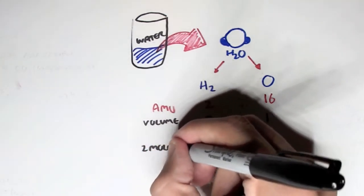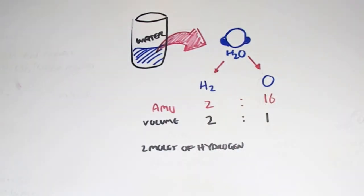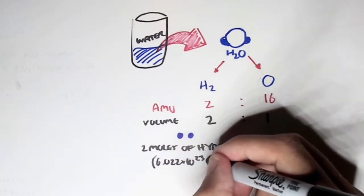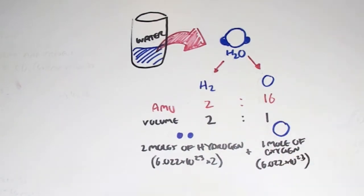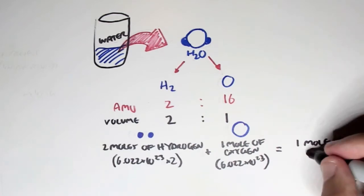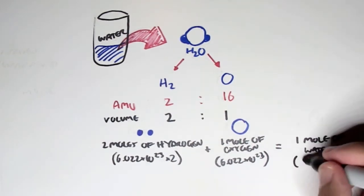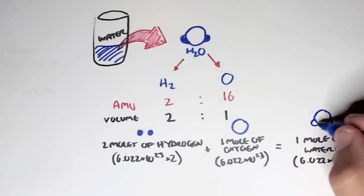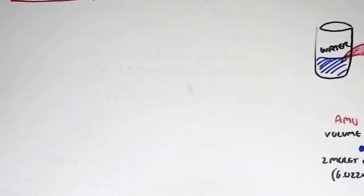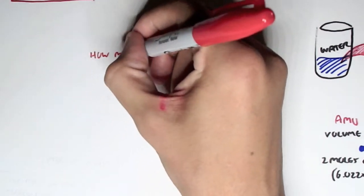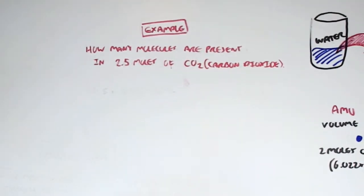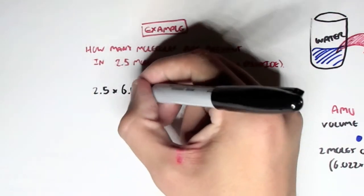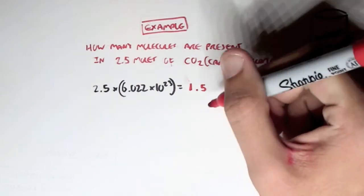If we had 2 moles of hydrogen — 6.022×10²³ times 2 — and added 1 mole of oxygen — 6.022×10²³ molecules of oxygen — we can make 1 mole of water, H₂O: 6.022×10²³ water molecules. For example, how many molecules are present in 2.5 moles of carbon dioxide? All you have to do is multiply 2.5 by Avogadro's number, which gives us 1.5×10²⁴.